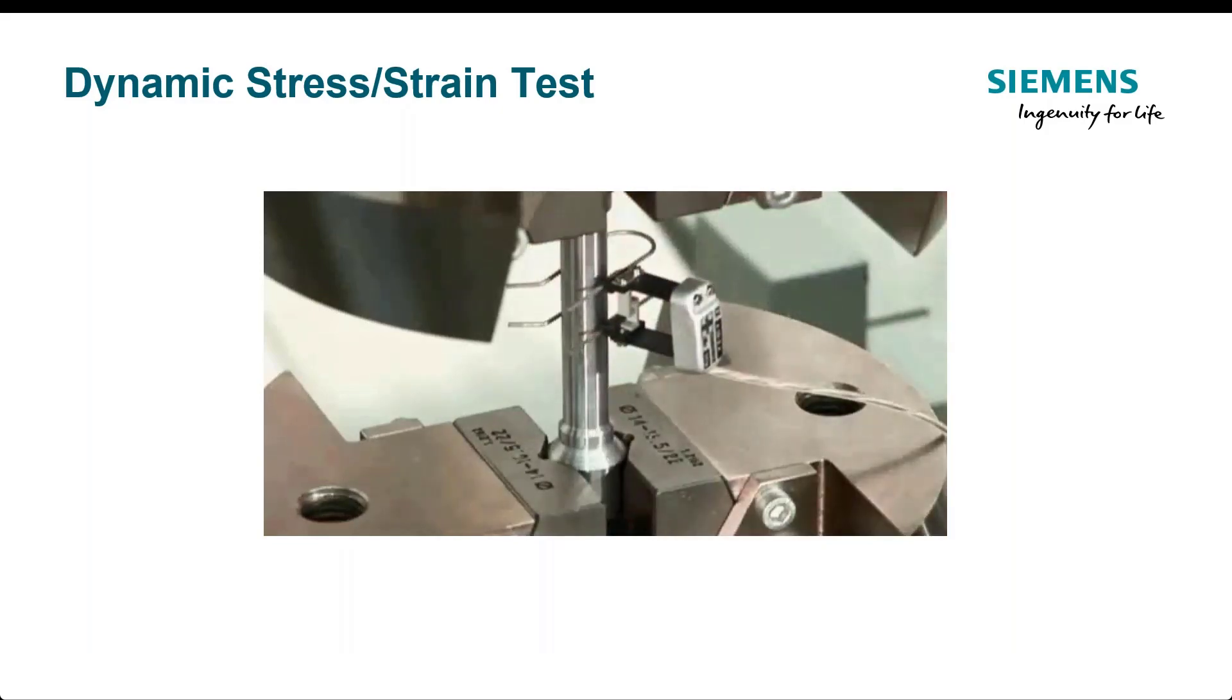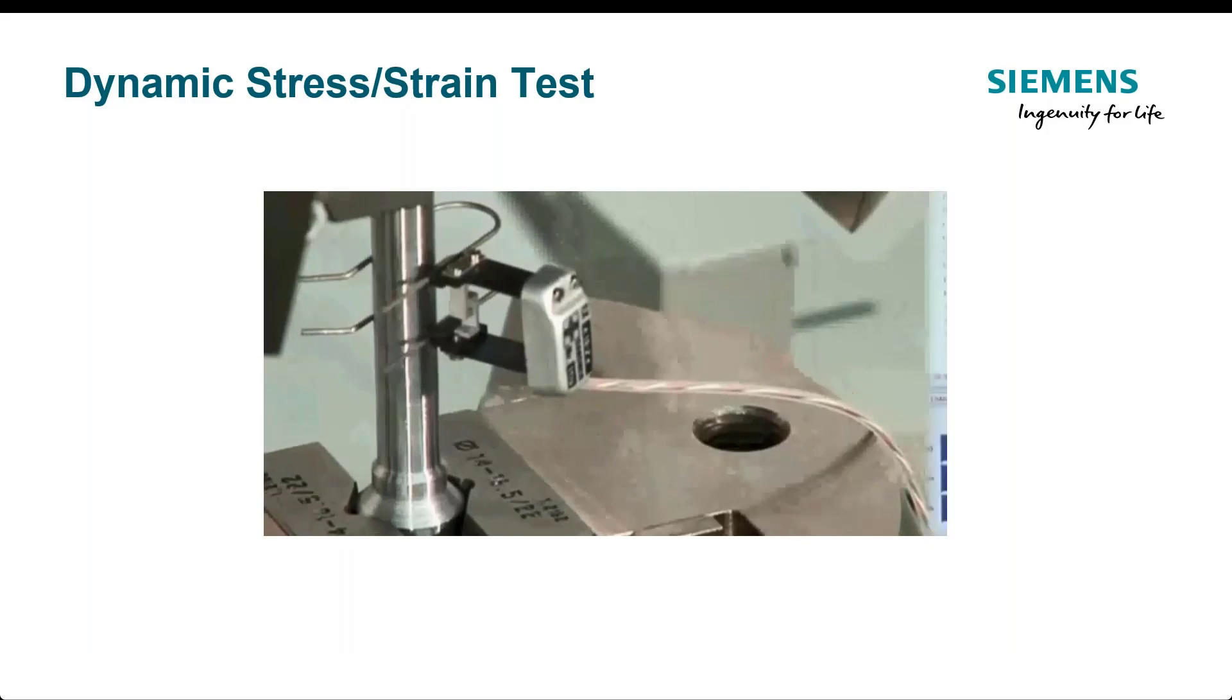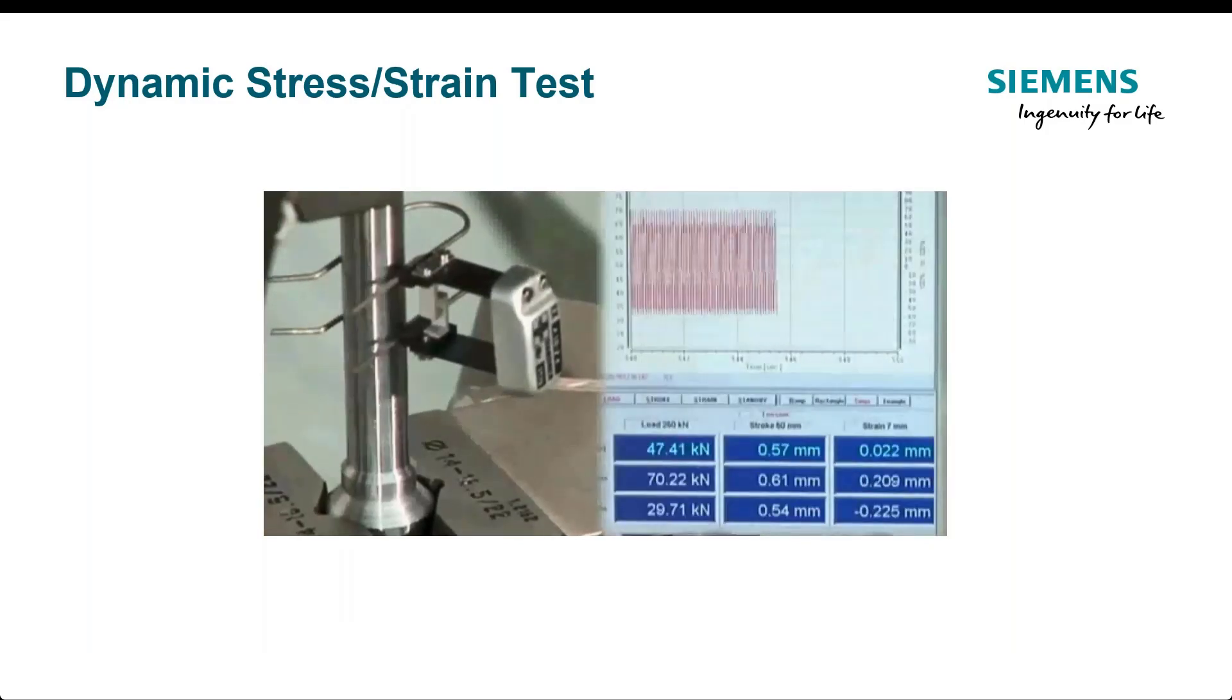This is a dynamic straight test. Here we're going to cycle this at a known load. In this case, they're controlling strain, and we're going to cycle it until it fails.